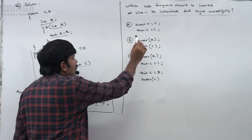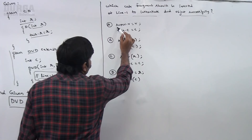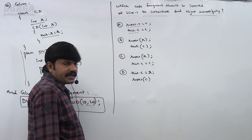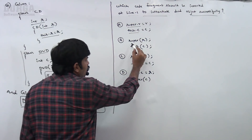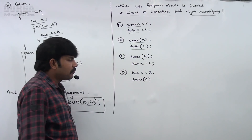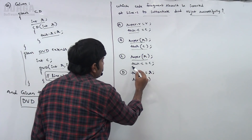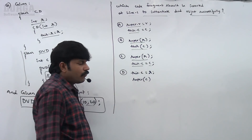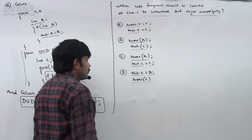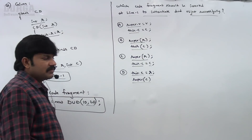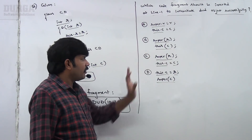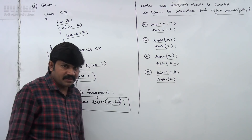First option: super.R = R; this.C = C. Second option: super(R); this(C). Fourth option: this.C = R; super(C). These are the four options. So which is the correct answer?